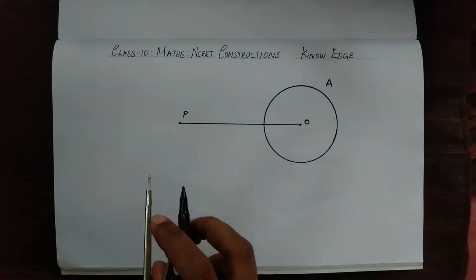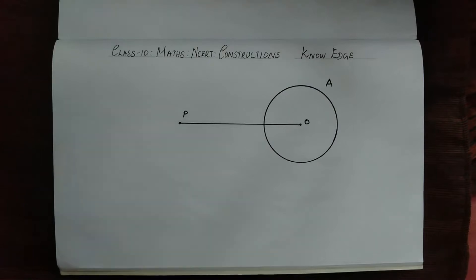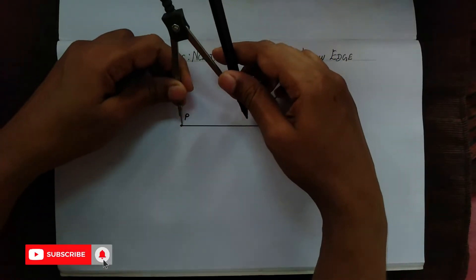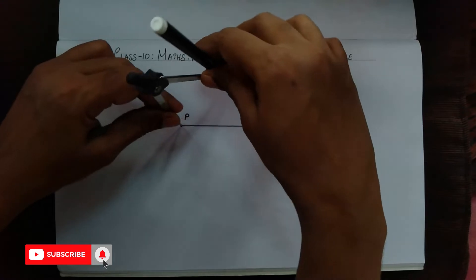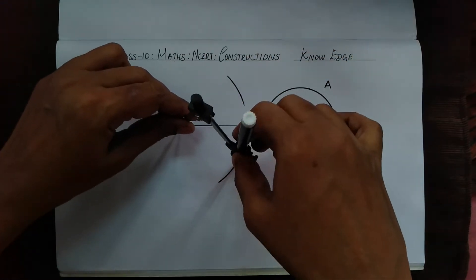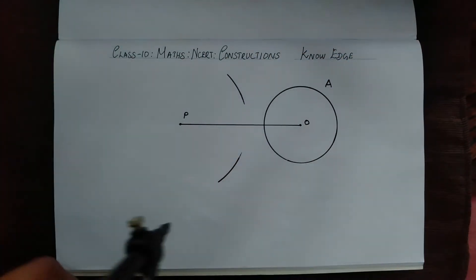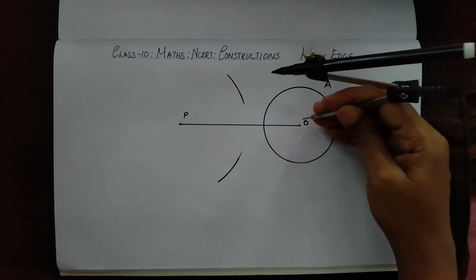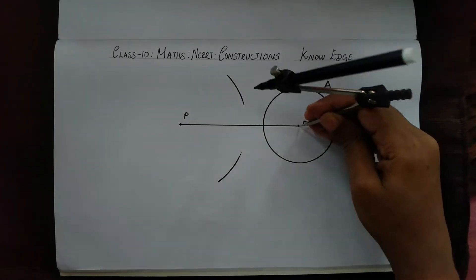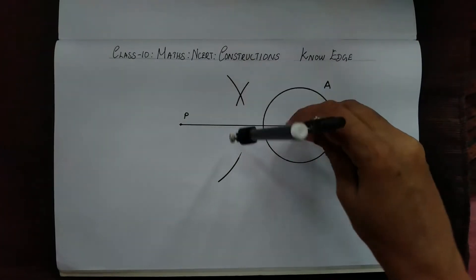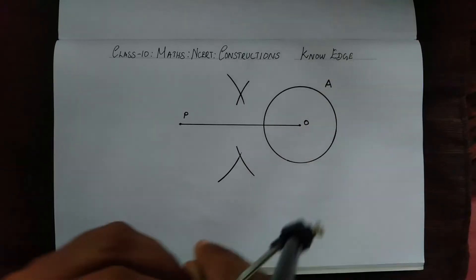For that we have to draw a perpendicular bisector. Let's take a random measurement from P and draw two arcs on both sides. Same way, let's keep this compass at O and draw two arcs intersecting both the previous arcs.